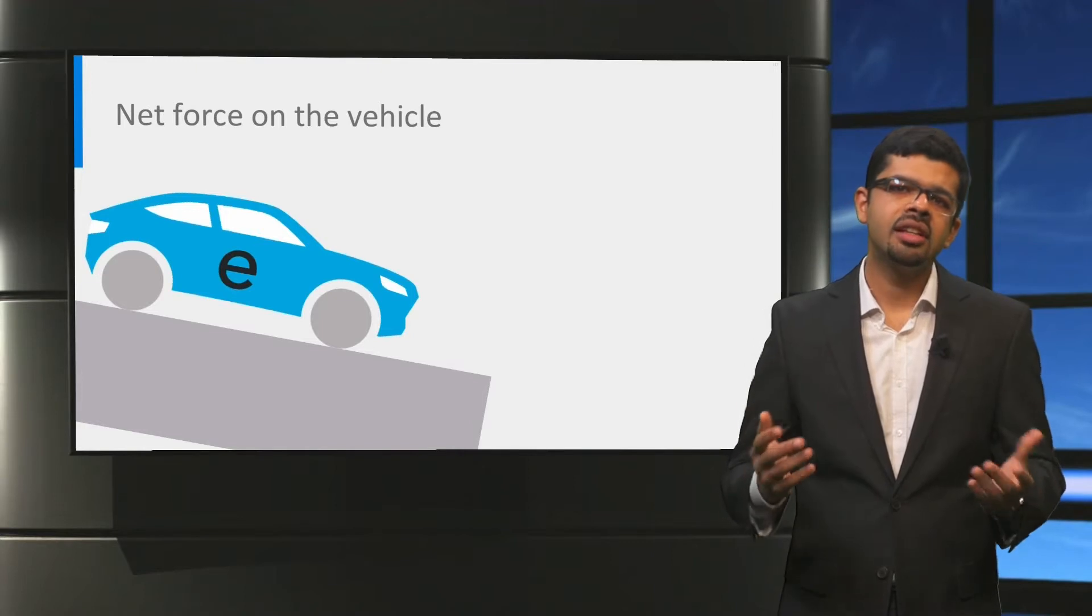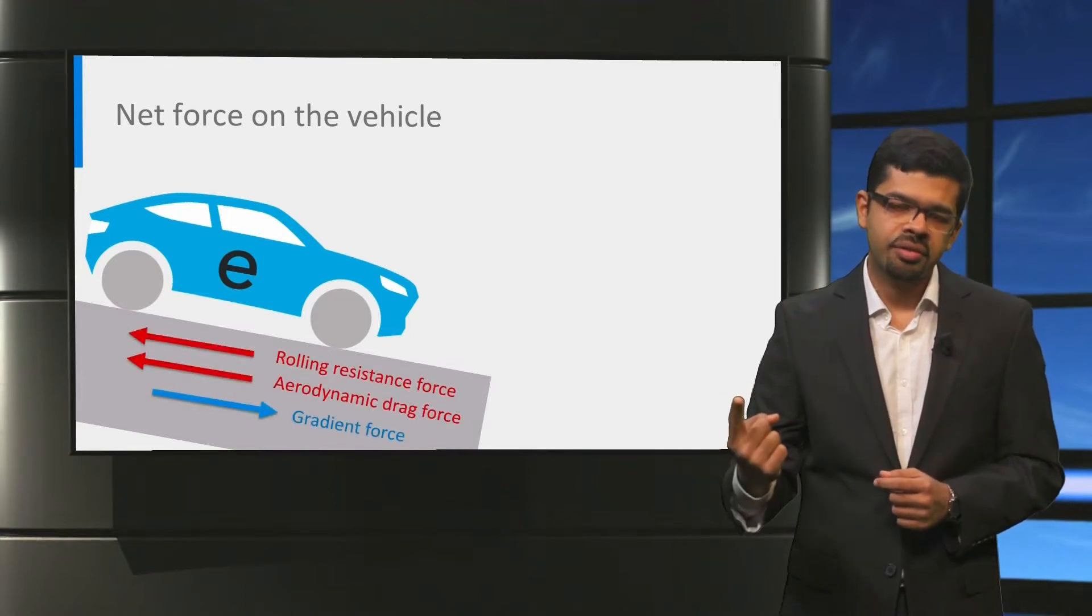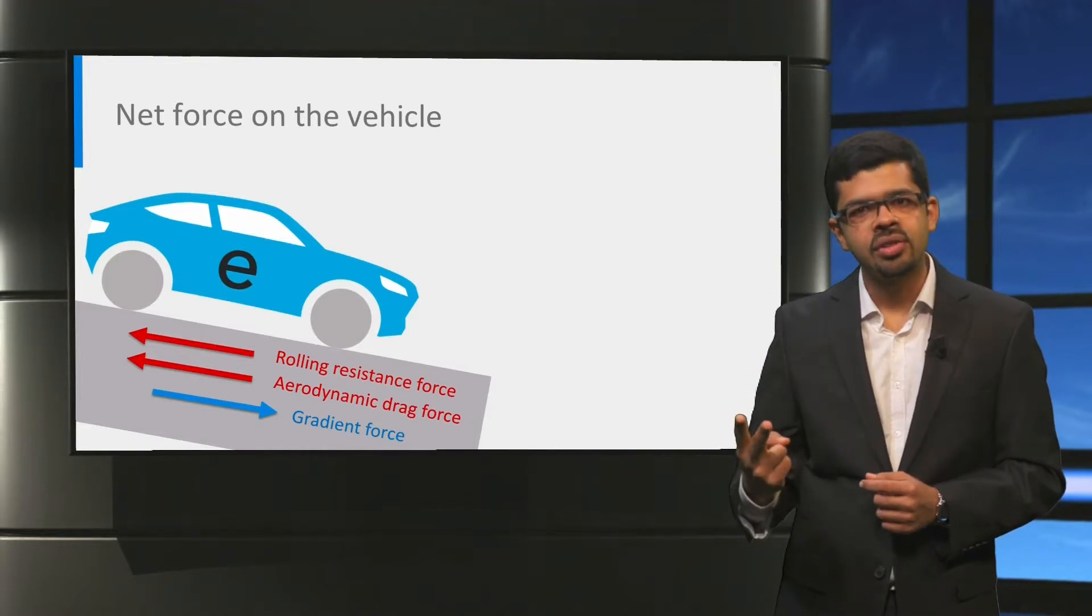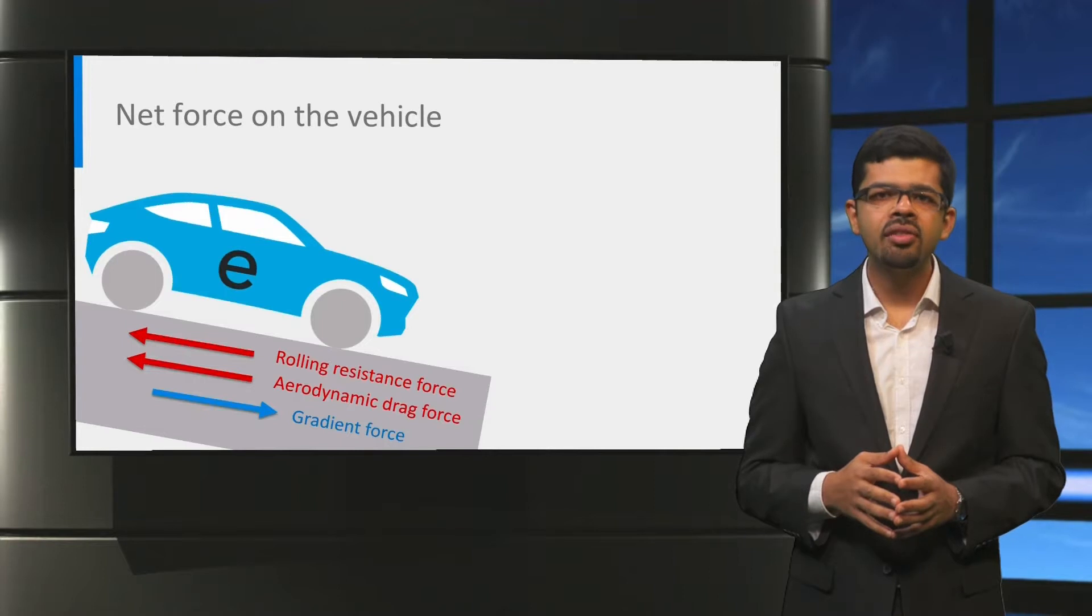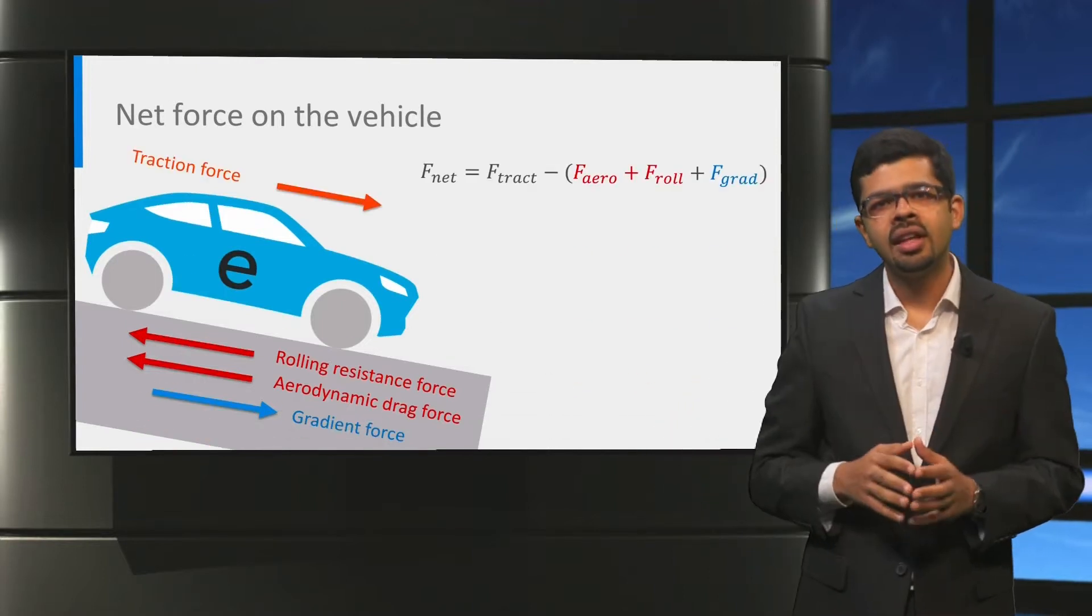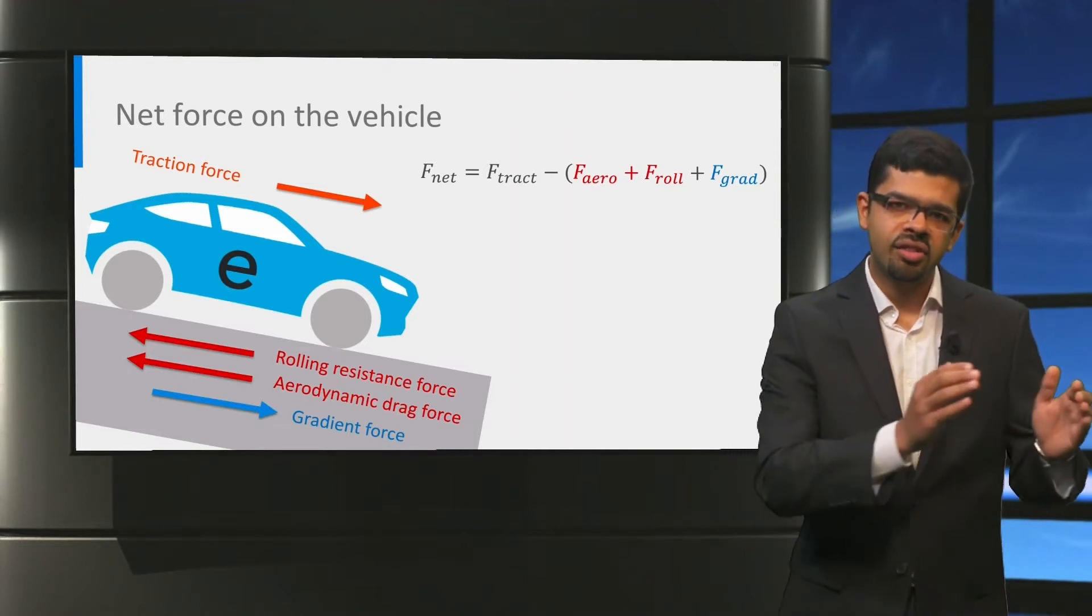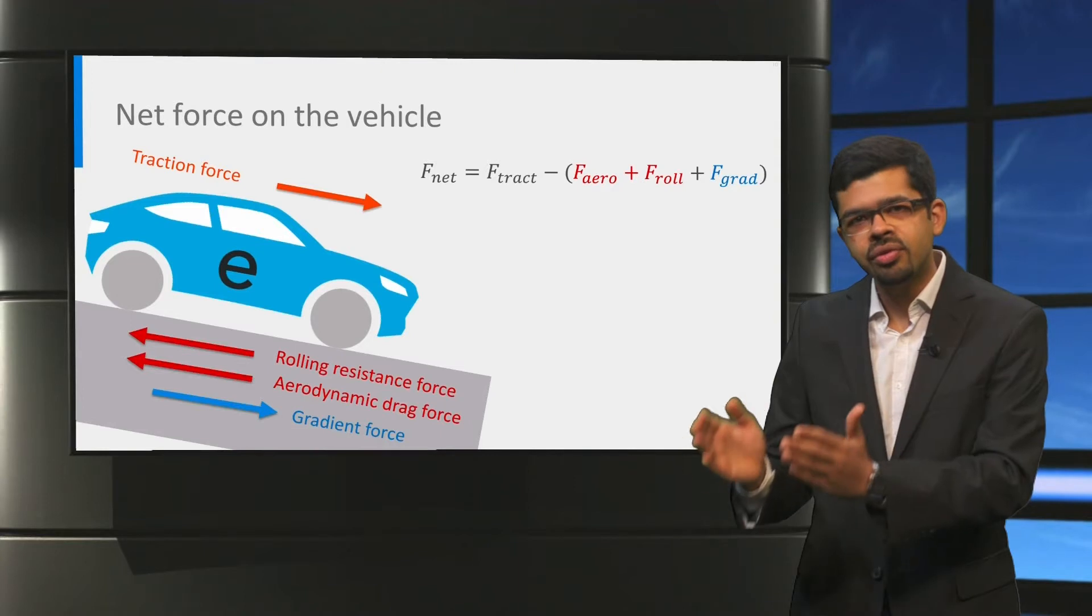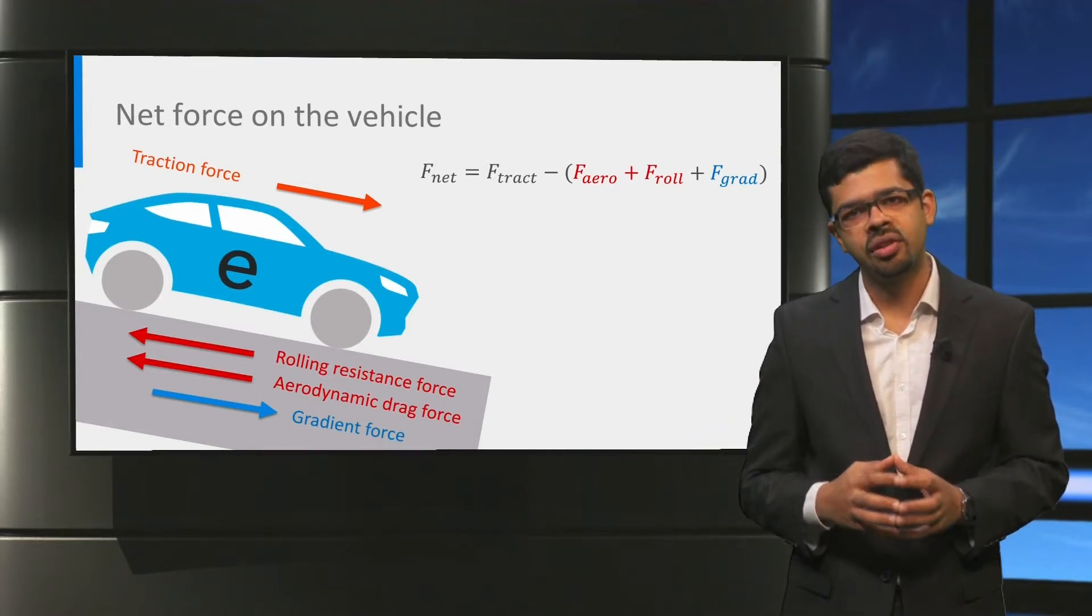If we now consider a vehicle moving on an inclined surface, then the aerodynamic drag force, the rolling resistance force, and the gradient force act on the vehicle. If we now include the traction force provided by the vehicle powertrain, then the net force on the vehicle Fnet is the difference between the traction force and the sum of the forces due to the aerodynamic drag, rolling resistance force, and the road gradient.